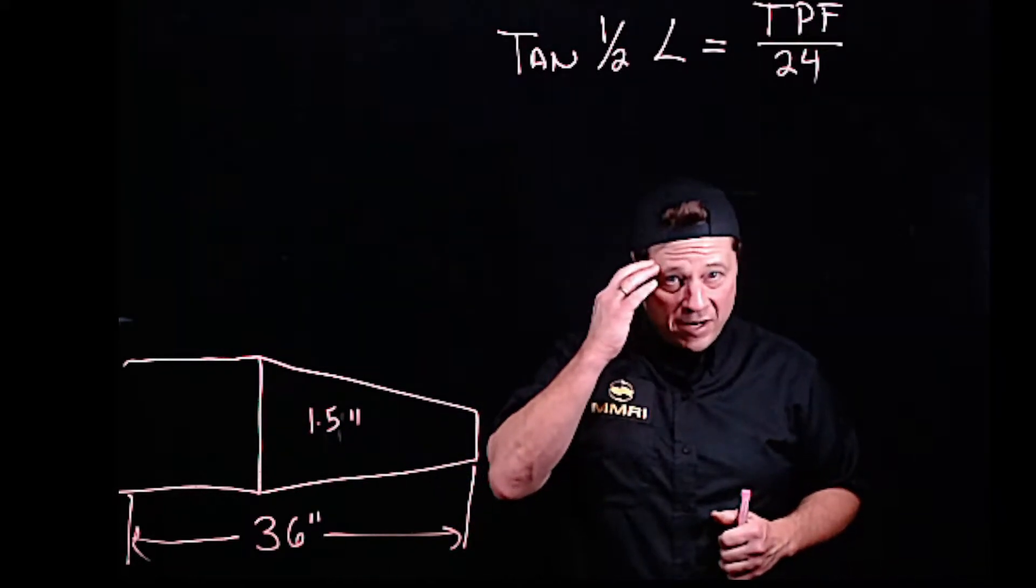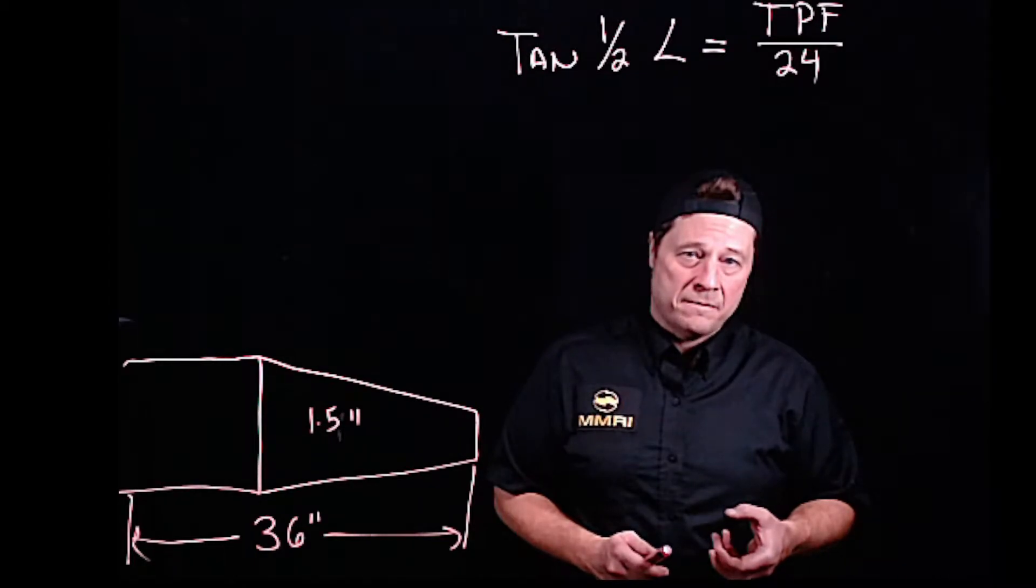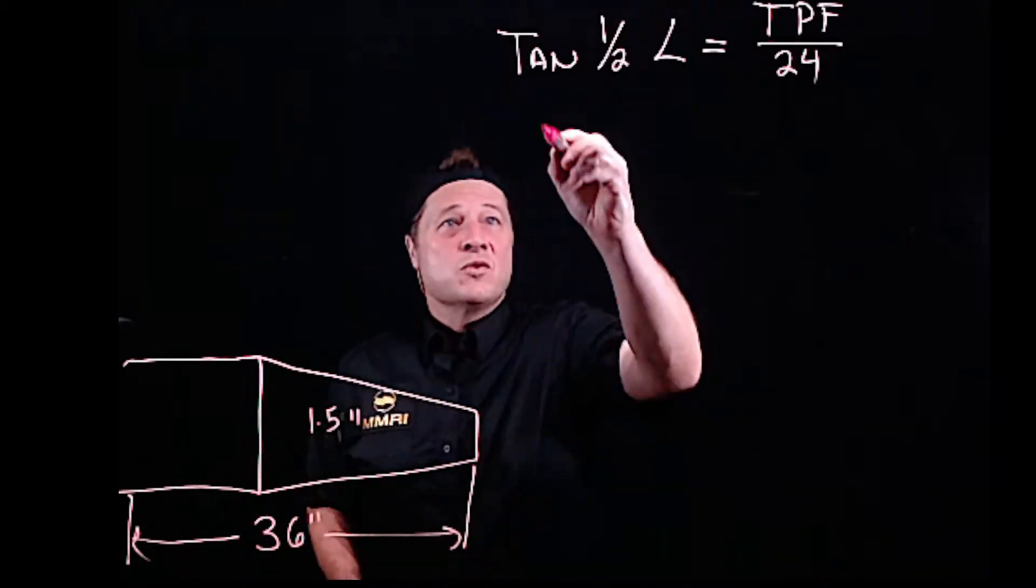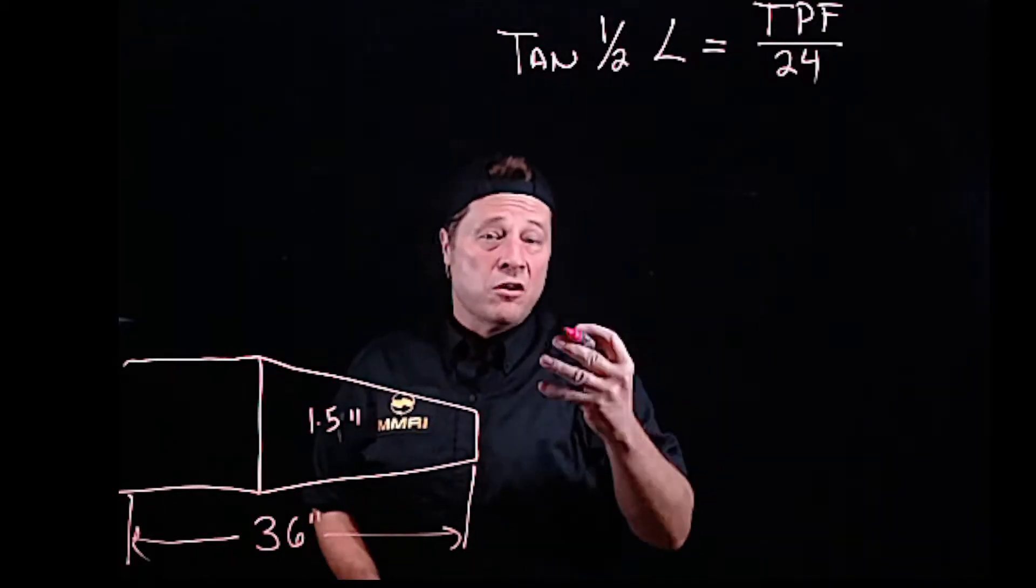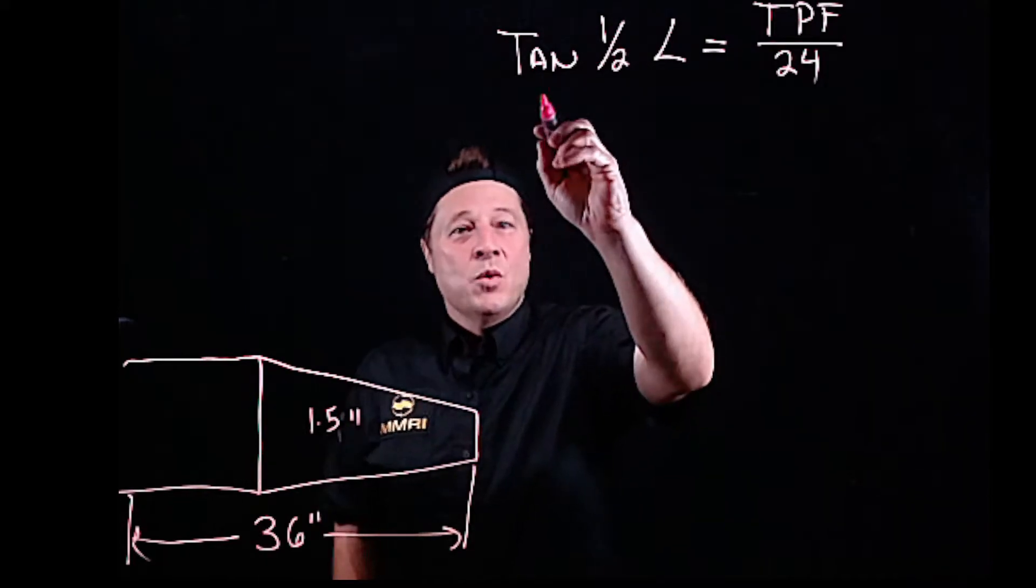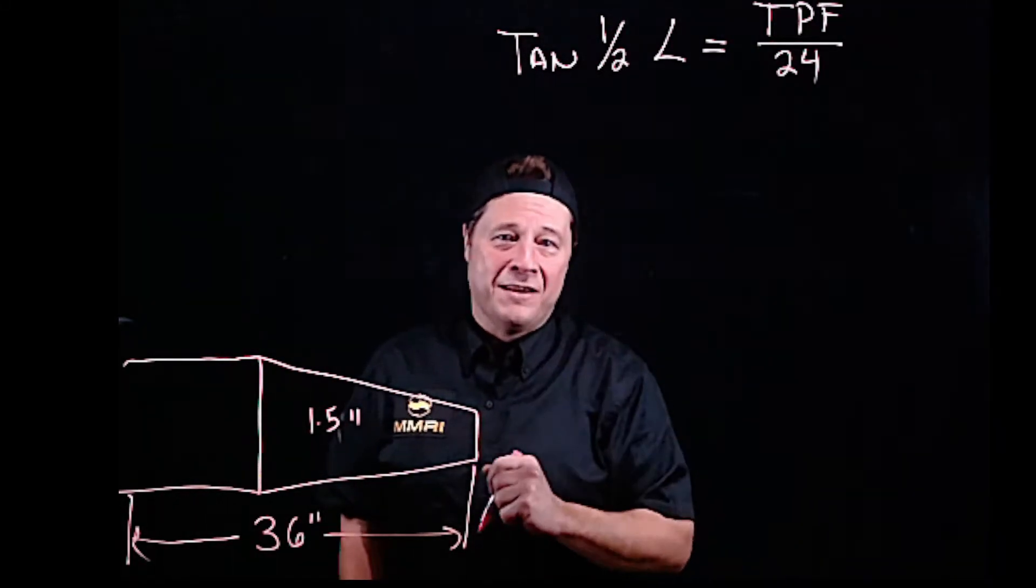What you need to get in your head is that a compound rest cut is a radial cut. You're cutting a radius, and this is what we're solving. We're solving the radial cut.